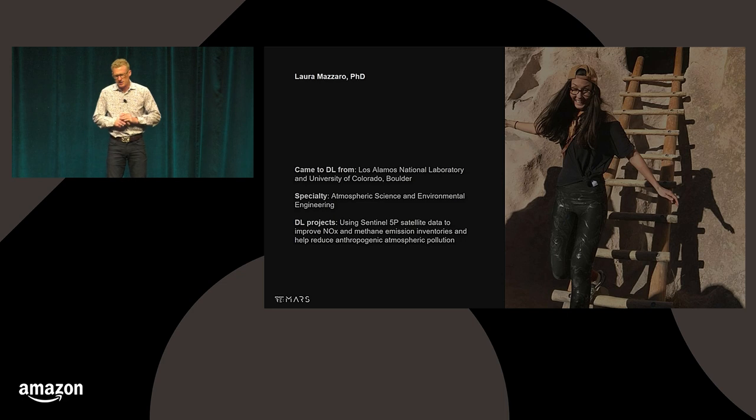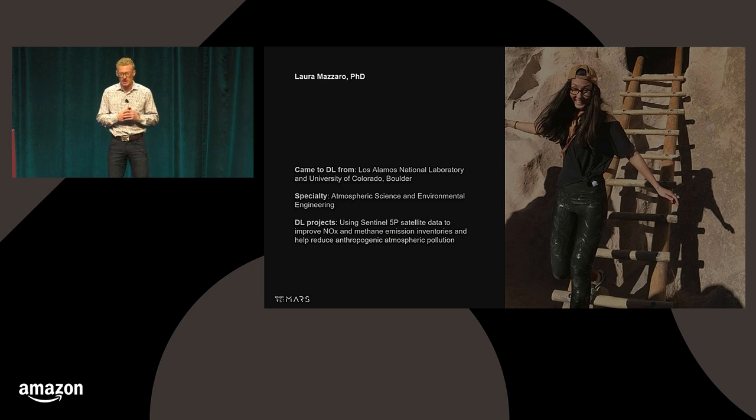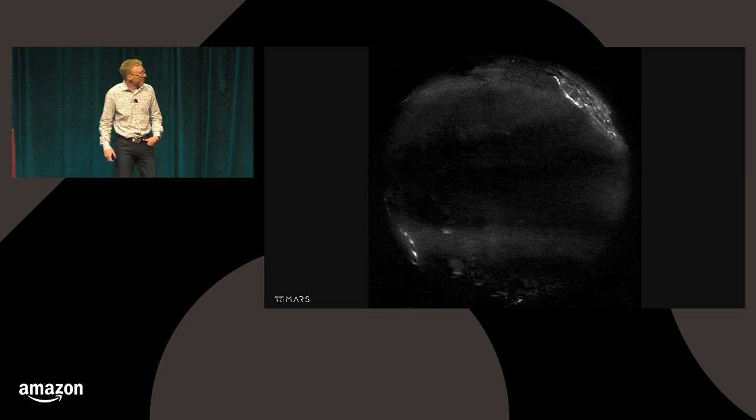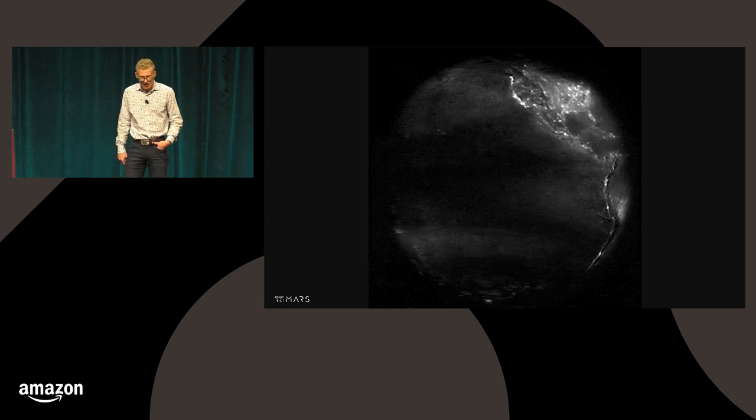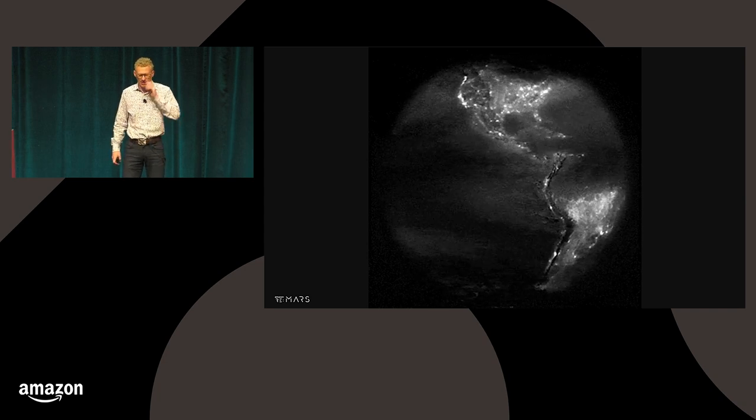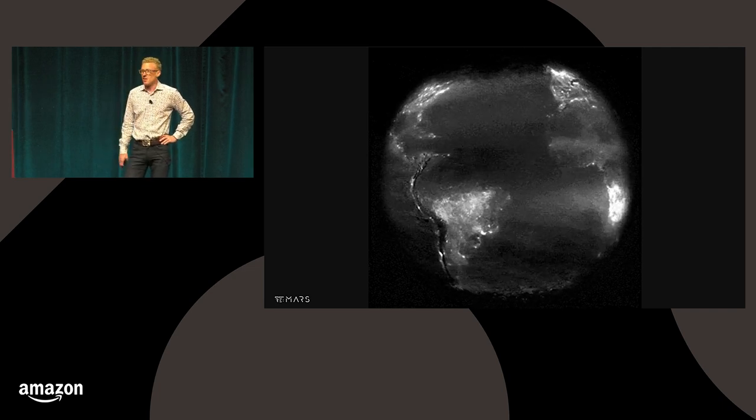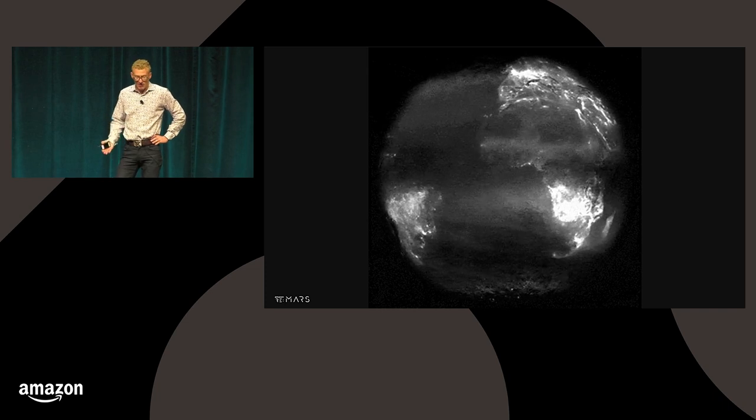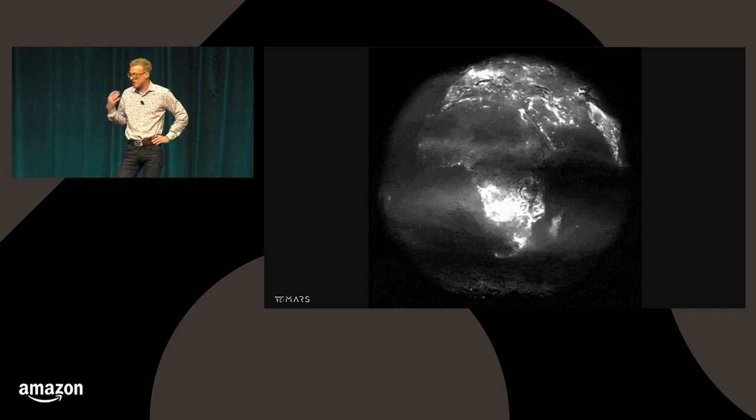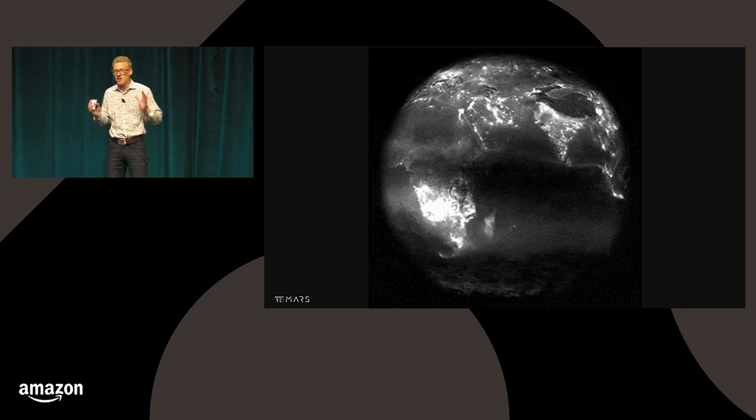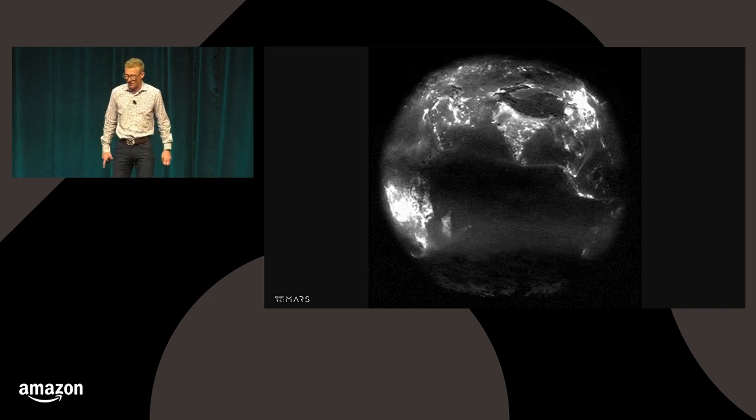So first scientist we want to feature is Laura Mazzaro. So she's an atmospheric scientist. She came from Los Alamos National Laboratory. And what we're going to show you here is that satellite, Sentinel-5P, some of the really cool things you could do with it. So this is a picture of the globe slowly spinning. And this is a map of NO2. So nasty smelling, gaseous pollutant, mostly from burning things. So obviously not very good for you. But Sentinel-5P doesn't just track this. It tracks aerosols, carbon monoxide, formaldehyde, carbon dioxide. So it's a really rich satellite.